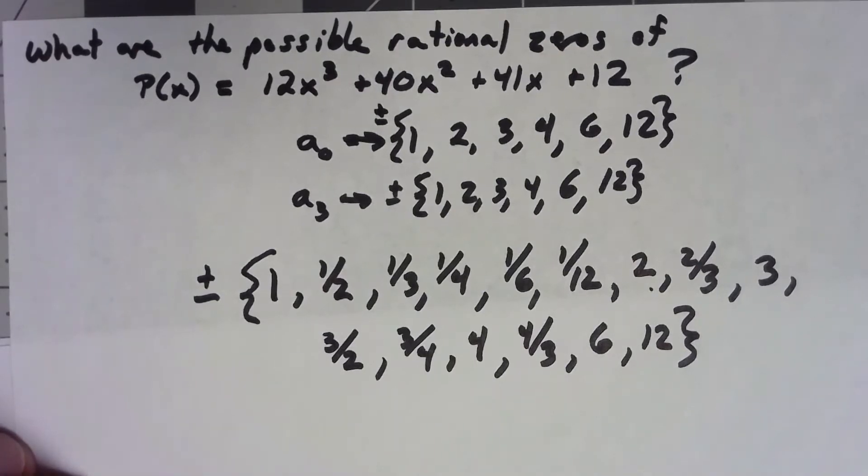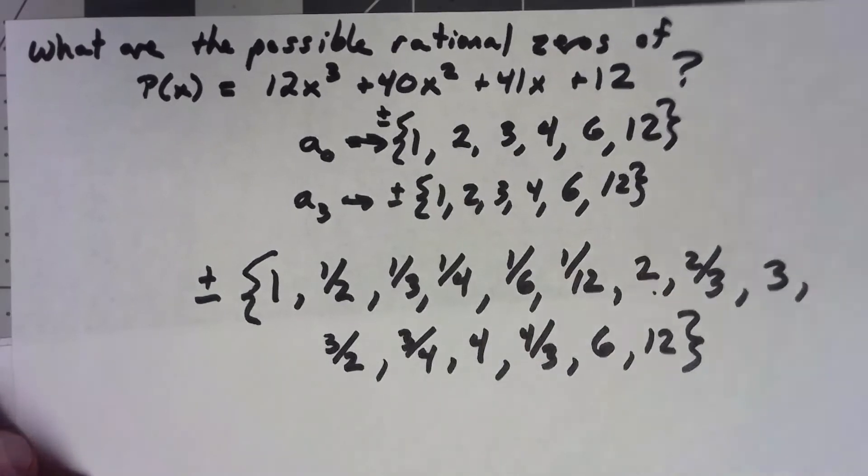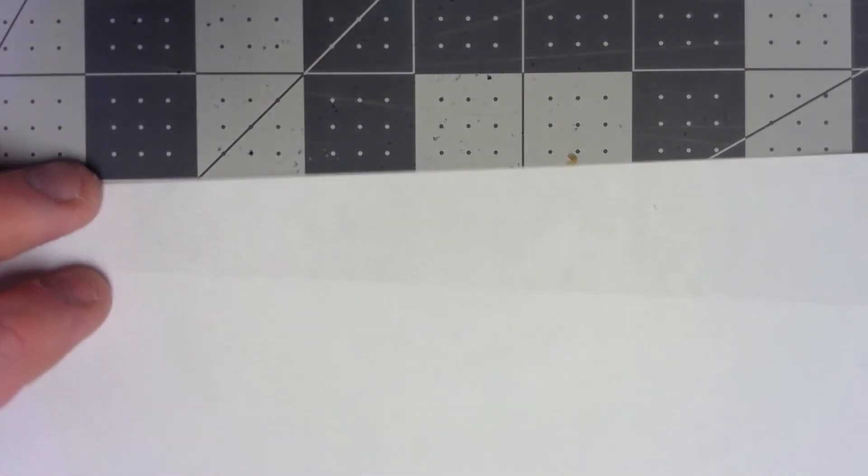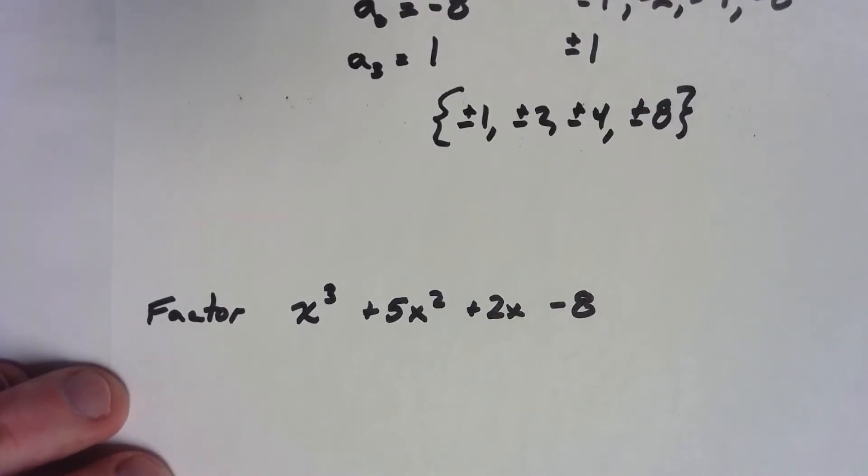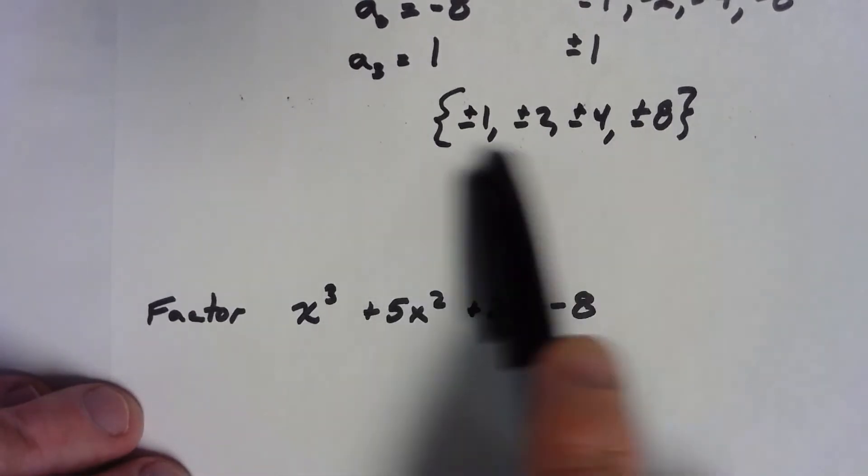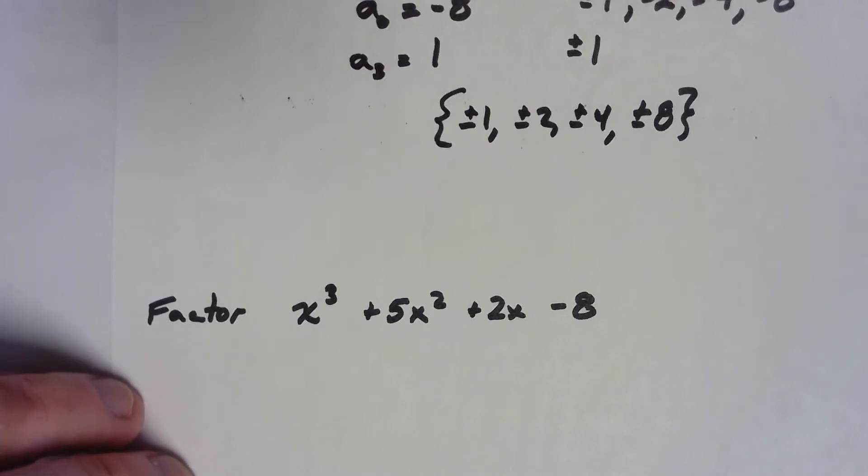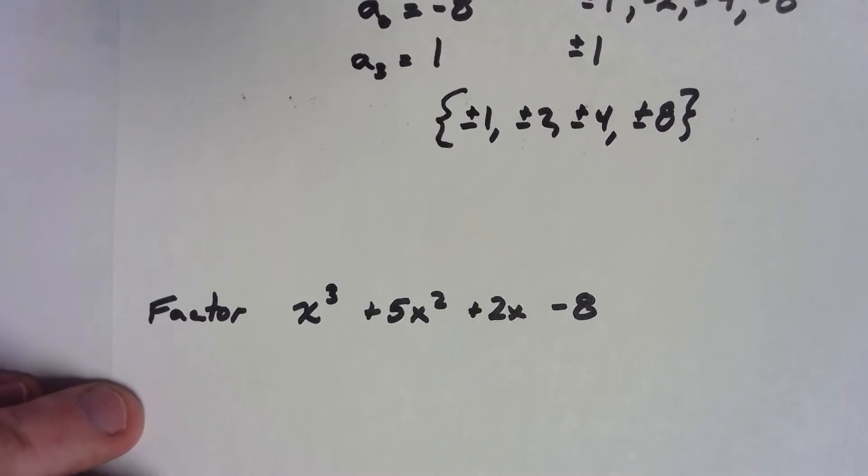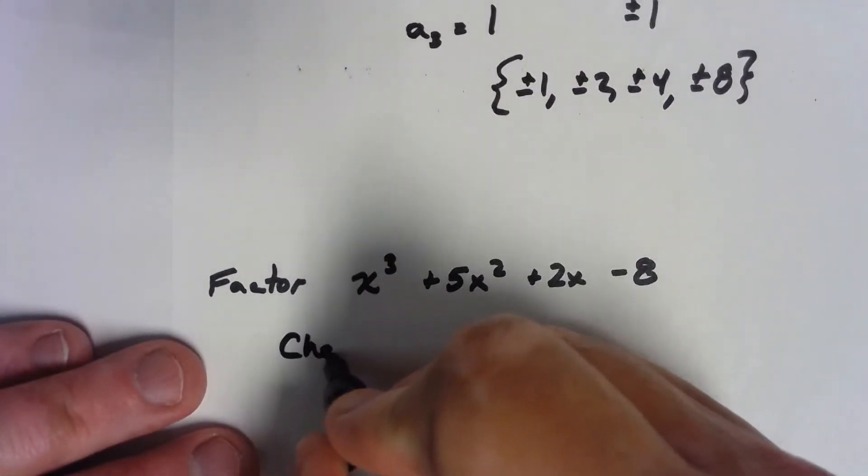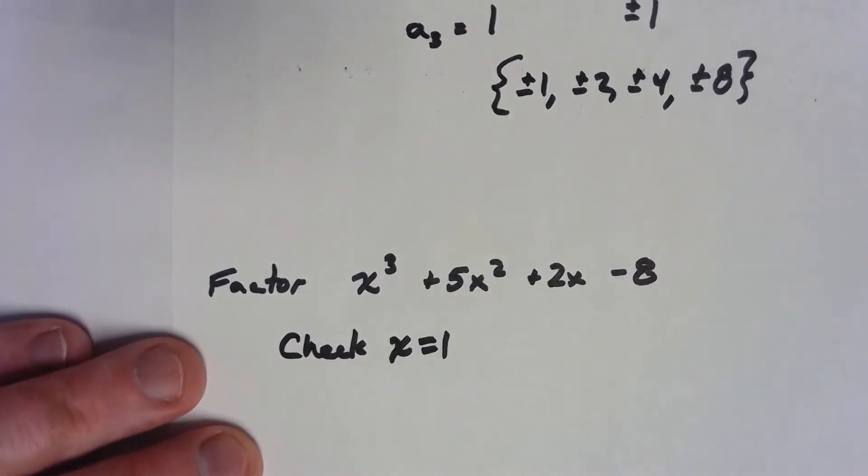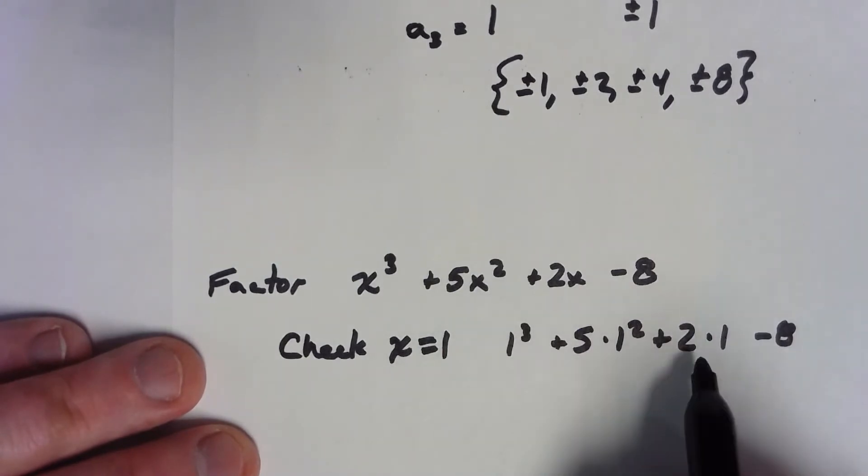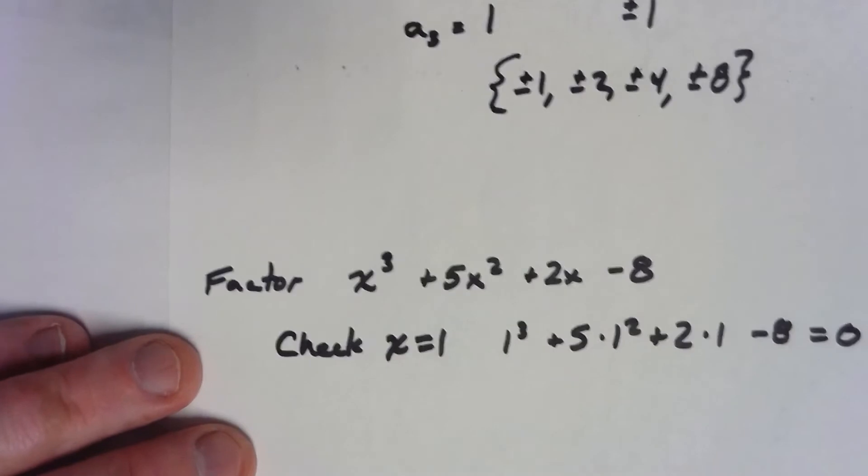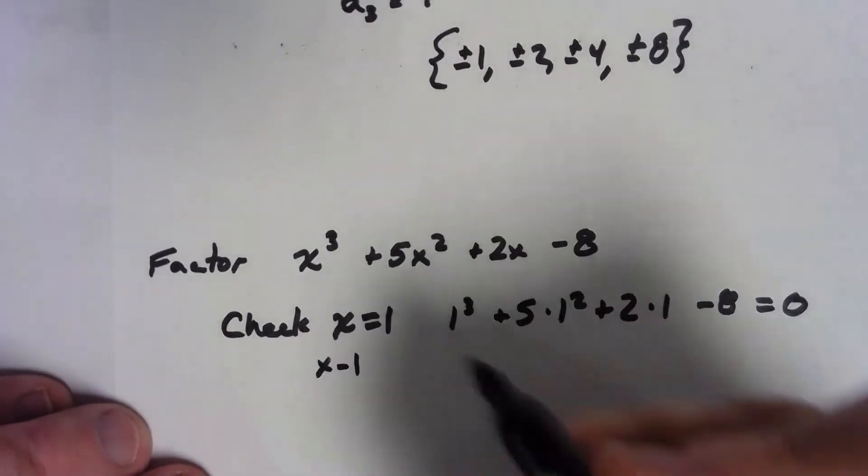So how can we actually use this? Well, it goes back to a kind of problem we did a couple of videos back. Let's say I want to factor x cubed plus 5x squared plus 2x minus 8. Well, we can do this as soon as we know what a zero is. I only have these possibilities for what that zero could be. So, I always start with the easiest one. So, I'm going to check x equals 1. Is that a zero? 1 cubed plus 5 times 1 squared plus 2 times 1 minus 8. 1 plus 5 plus 2 is 8 minus 8 is zero. That is, in fact, a zero.